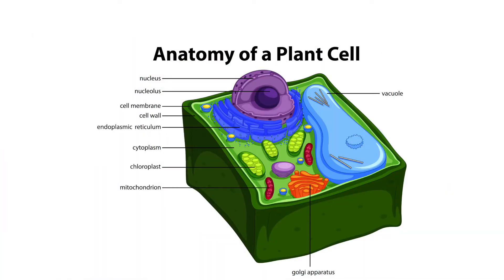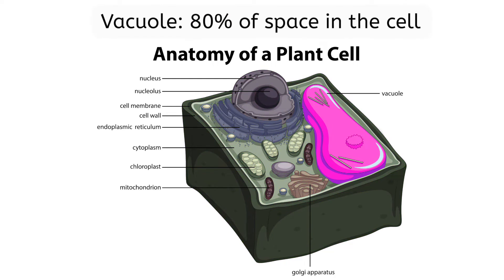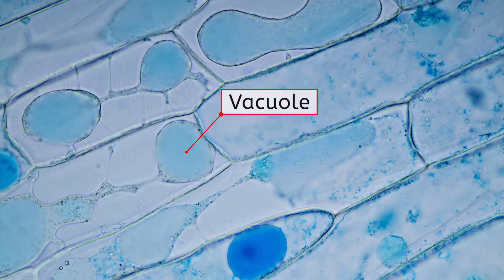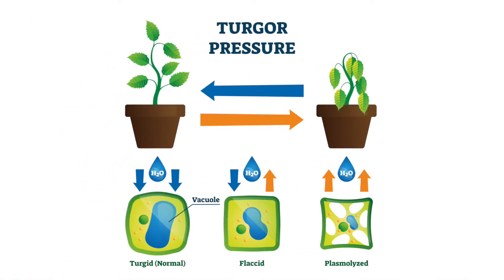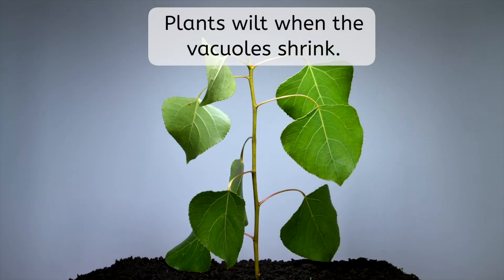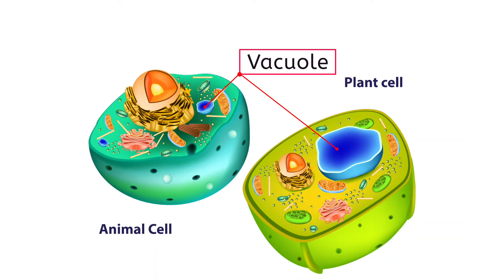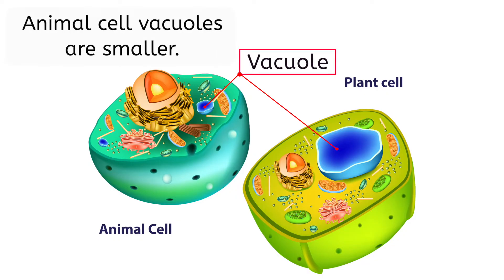The other noticeable difference when looking at a plant cell, as compared to an animal cell, is the presence of a large vacuole. It may take up as much as 80% of the space inside the cell. The vacuole is filled with fluid. Not only does it serve as a reservoir for water and other nutrients, but it also exerts pressure, called turgor pressure, on the cell wall to help maintain the shape of the cell. When a plant has not been receiving enough water, the vacuole shrinks and cannot exert the needed pressure on the cell wall. This is why the plant wilts and looks droopy. Some animal cells do have small vacuoles, but they are not as noticeable in the cell, and the cell does not depend on them to maintain shape.